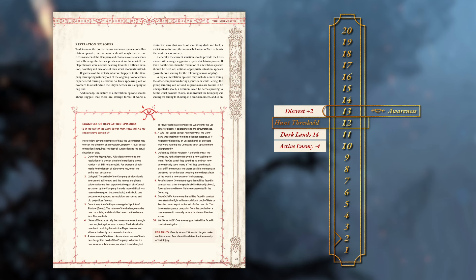The Revelation Episode could be specific actions of the enemy, some other unfriendly power trying to stop the player characters, or just a stroke of extremely bad luck. As a Loremaster, you must take into consideration the nature and consequences of a Revelation Episode, as well as the current circumstances of the company, to determine some turn of events that will make things thematically and appropriately worse for the heroes. The Revelation Episode does not need to happen immediately once the Hunt Threshold is met — if the heroes are in a place where a good option doesn't quite make sense, hold off until the first opportunity where it works.